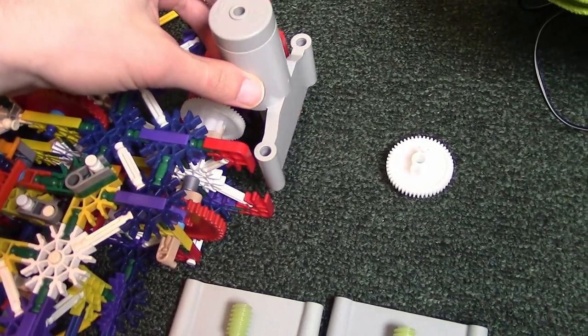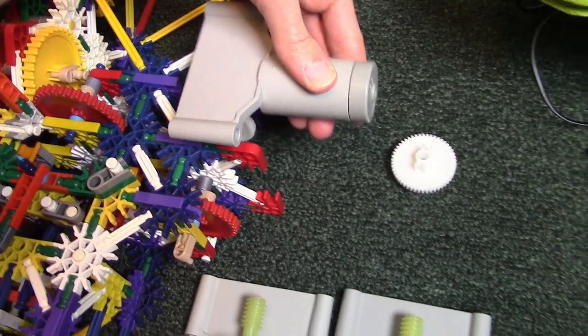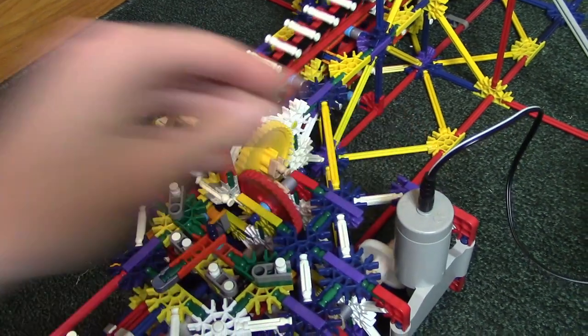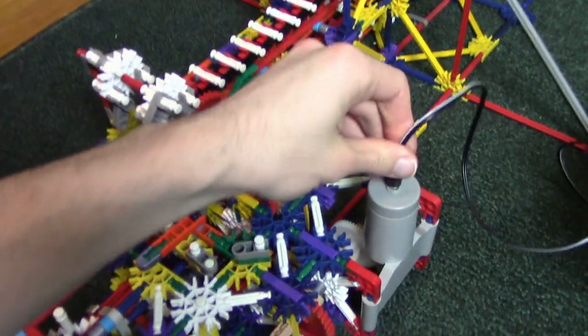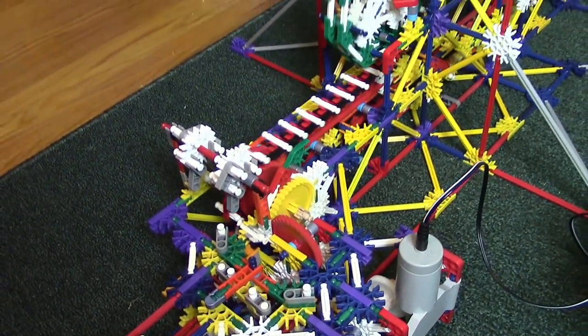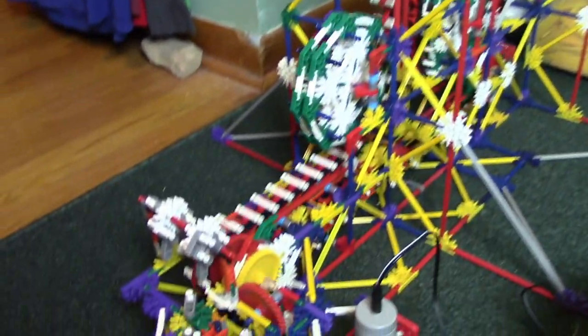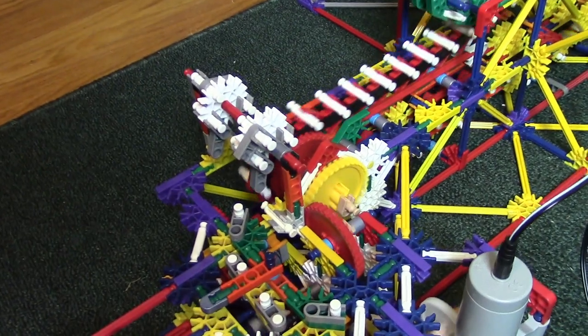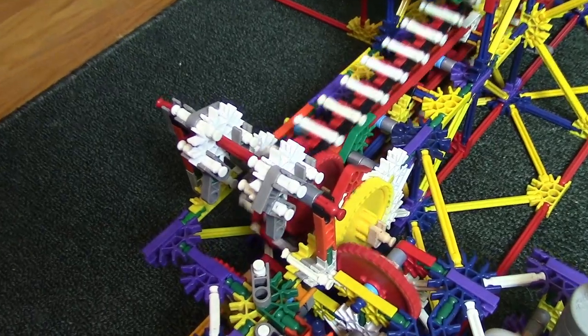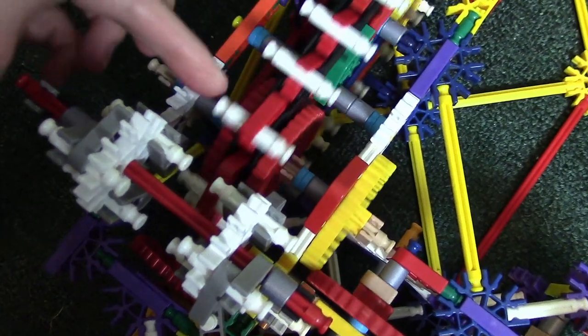I could also arrange the motor to where it goes like that, and that would also reverse the direction. Let's try this again. It came out right there. So that's how it's moving. I can tell that it's not really moving as smoothly as I would want it. Just because of the way the chain is on the red gears.